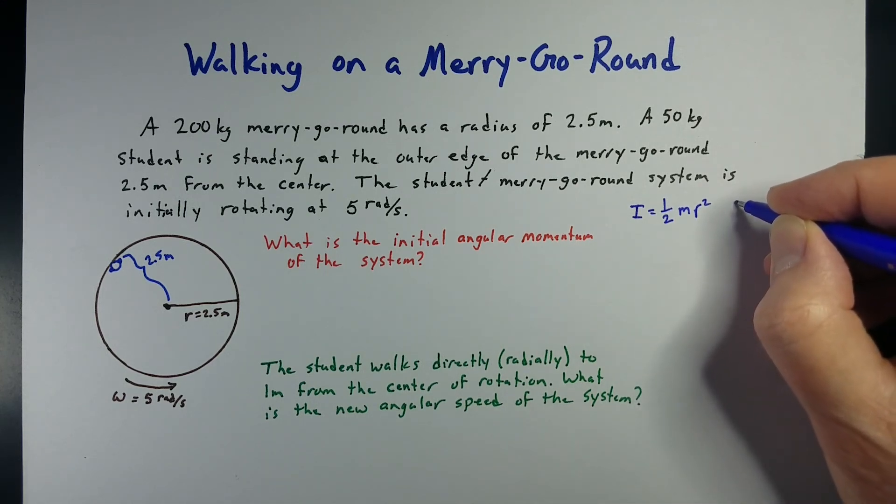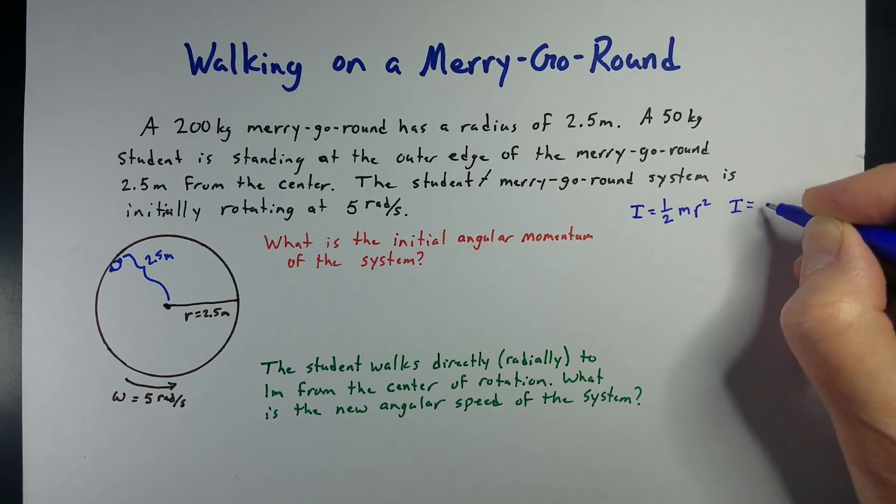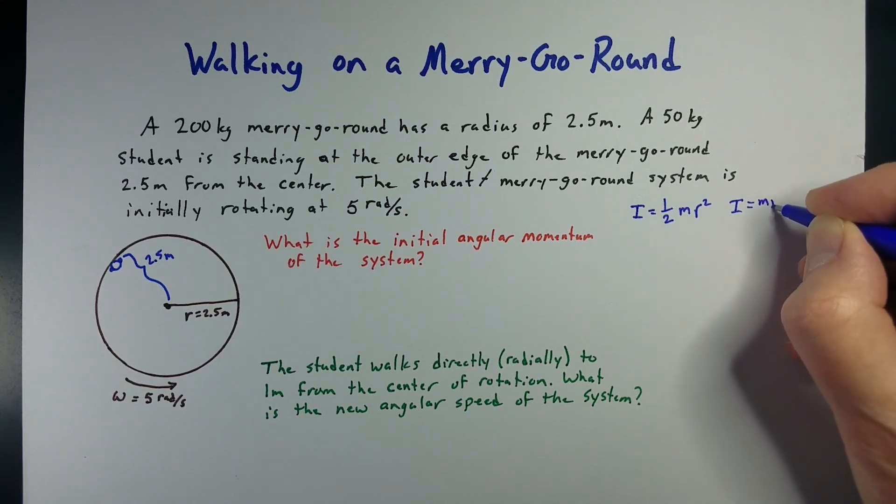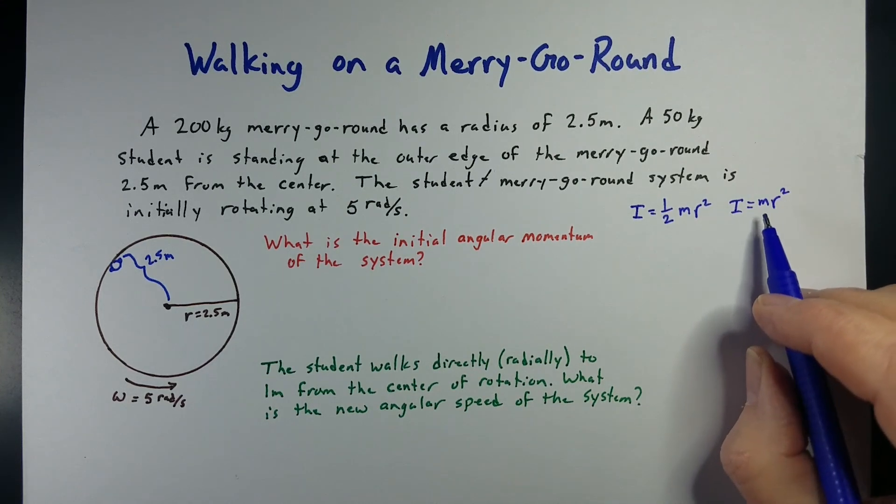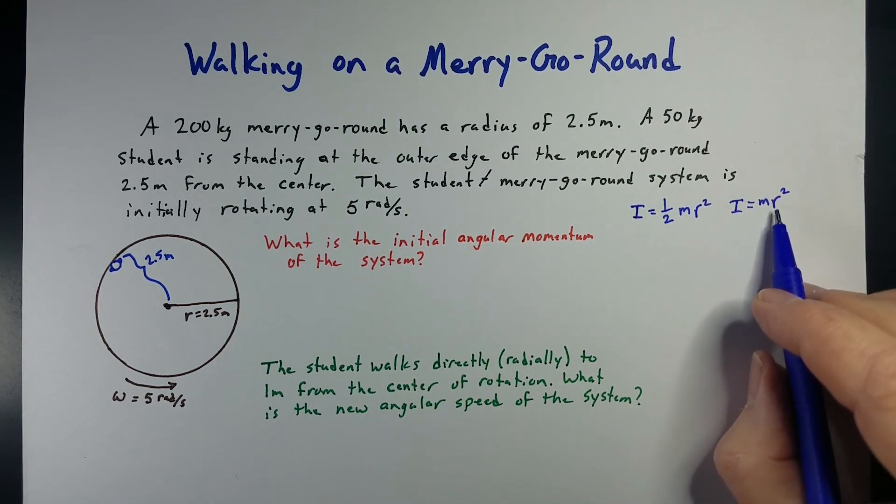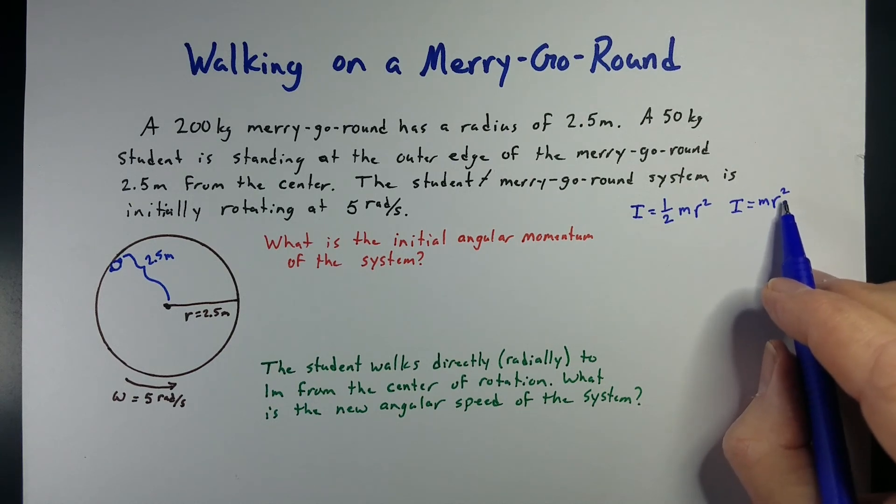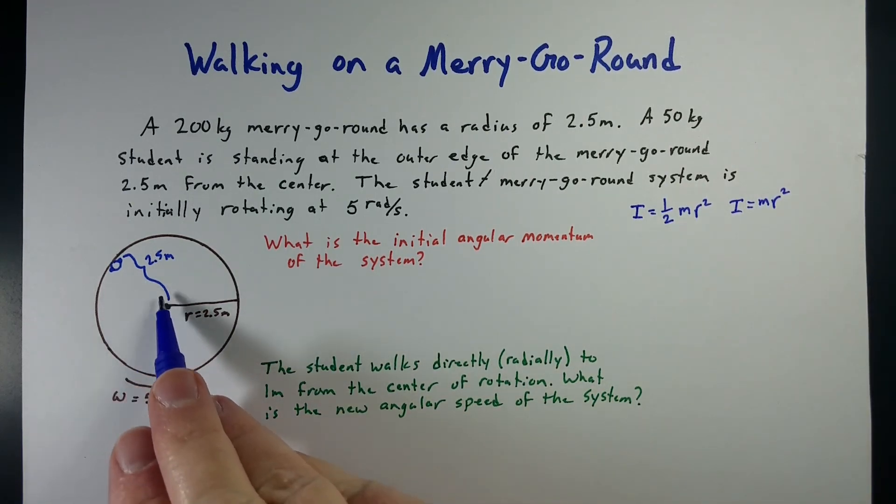Now, for the student, we're going to have to model that person as just a point mass. So, the moment of inertia is just m r squared, the mass of the student, and where that student is in relation to the center of rotation.